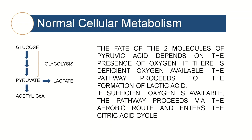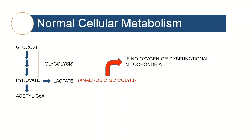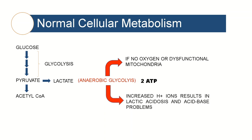If on the other hand there is sufficient oxygen available, which should be the normal case in the cell, the pathway then proceeds via the aerobic route and enters the citric acid cycle, also called the Krebs cycle. If there is deficient oxygen in the cell, the pyruvic acid forms lactate — this process is known as anaerobic glycolysis, anaerobic literally meaning no oxygen. By the end of this process, glycolysis and secretion of lactate, there is a total of two ATP molecules produced.